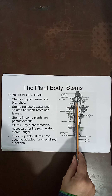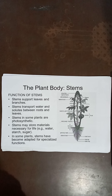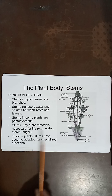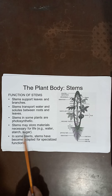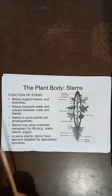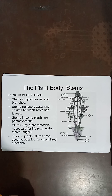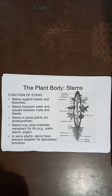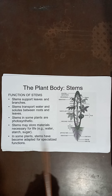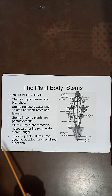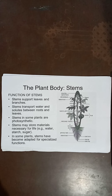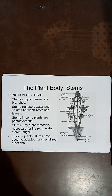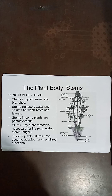Most of the stems help in storage of food — that is water, starch, and sugar. For example, sugarcane stores most of the food in the stem. In some plants, stems have become adapted for specialized functions.